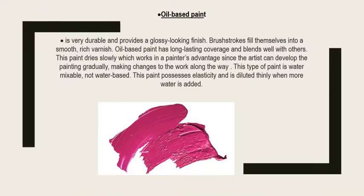Oil-based paint is very durable and provides a glossy looking finish — brush strokes fill themselves into a smooth, rich varnish. Oil-based paint has long-lasting coverage and blends well with others. This paint dries slowly, which works in a painter's advantage since artists can develop the painting gradually, making changes along the way. This paint possesses elasticity and is diluted thinly when more water is added. Unlike acrylics, oil paints and enamel paints are durable and have a glossy looking finish — acrylics have a matte finish and oil paints have a glossy finish.